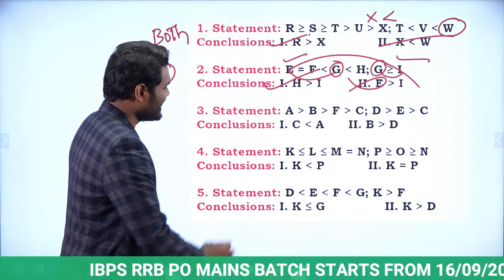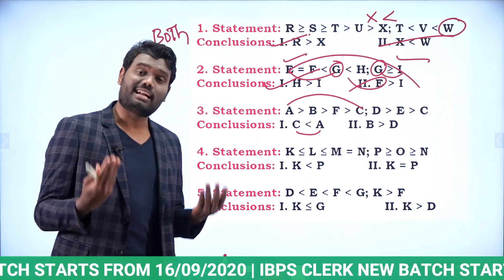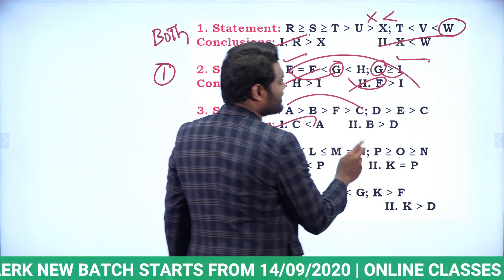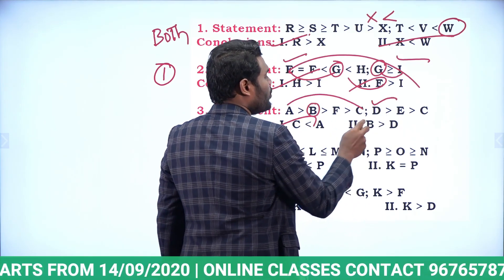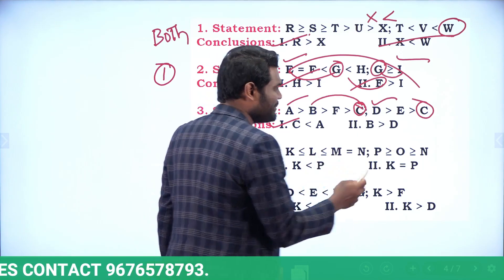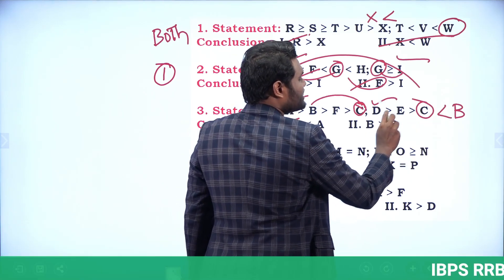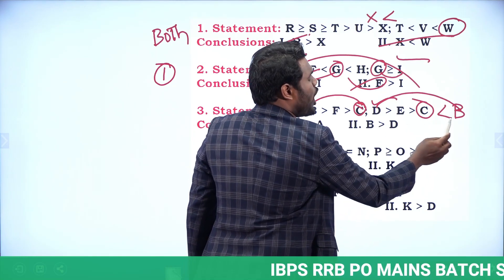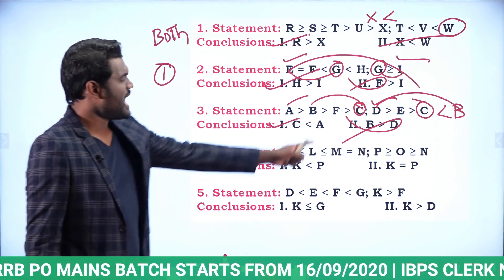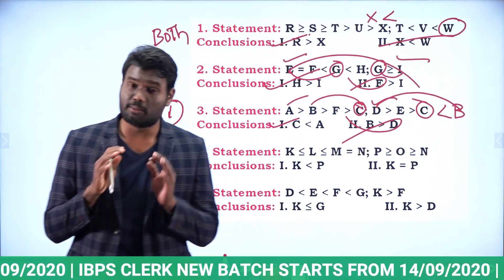Next question: relation between C and A — directly the common symbol is greater than, so A > C or C < A. First conclusion is correct. For B and D: the common person is C. B > C means C < B, and looking at D — opposite symbols means no relation, so that conclusion is wrong. Only conclusion one is the correct answer.